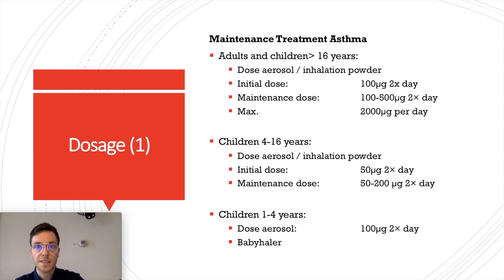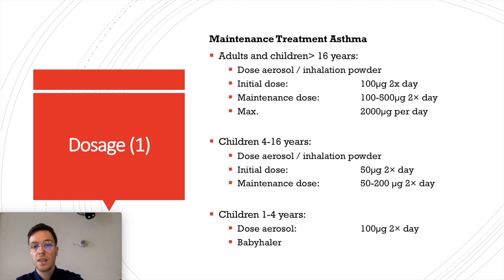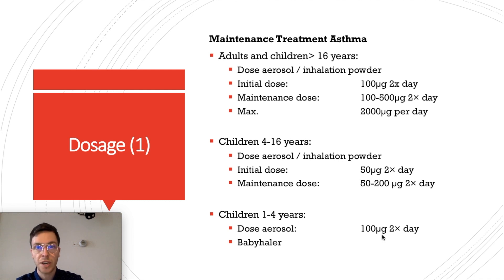For maintenance treatment of asthma in adults or children older than 16 years using dose aerosols or inhalation powder, the initial dose is 100 micrograms twice a day. The maintenance dose is 100 to 500 micrograms twice a day, depending on your doctor's advice, with a maximum of 2000 micrograms per day in severe asthma. For children aged 4 to 16 years, the initial dose is 50 micrograms twice a day and the maintenance dose is 50 to 200 micrograms twice a day. For young children aged 1 to 4 years, the dose aerosol should be 100 micrograms twice a day.